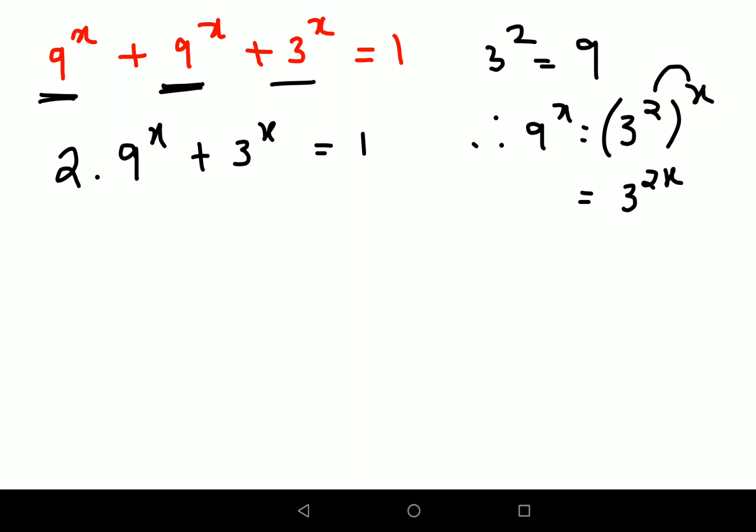Because the indices will get multiplied in this scenario. So you will write this as 2 times 3 raised to 2x plus 3 raised to x equals to 1.